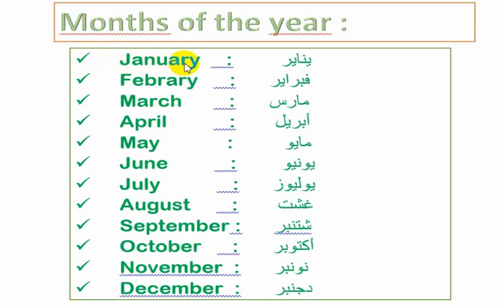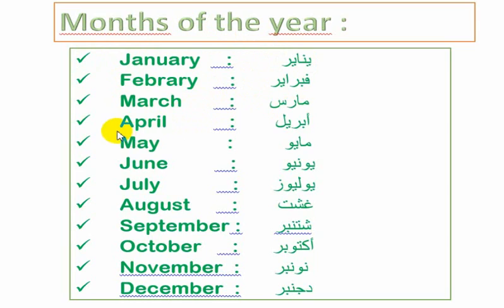February. February. February. March. March. April. April.